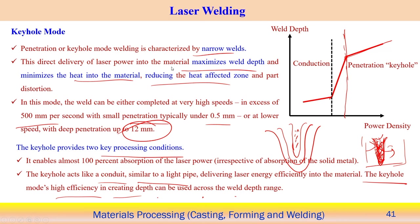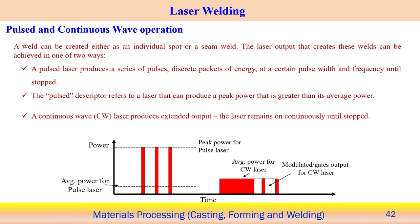There are two ways to operate the laser system: continuous laser and pulse laser, both usable in laser welding. The laser can create spot welding (laser stationary at a point) or seam welding (laser moving in a direction). In pulse mode, a series of discrete packets of energy are supplied at certain pulse width and pulse frequency.